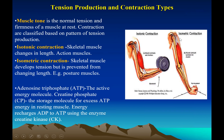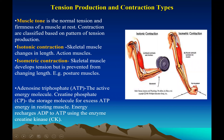Muscle tone refers to the tension that develops in muscles. There are two types of muscle contraction. In isotonic contraction, the length of the muscle changes — like during a bicep curl where the bicep bunches up. In isometric contraction, the muscle length does not change but tension is developed, such as when carrying grocery bags or pushing against a wall.